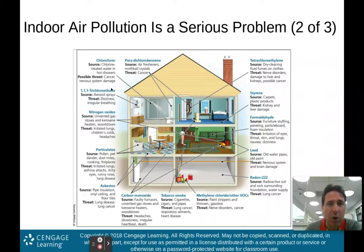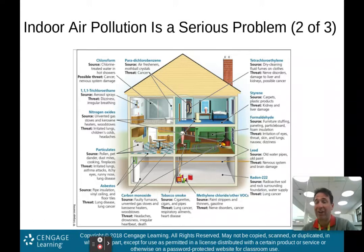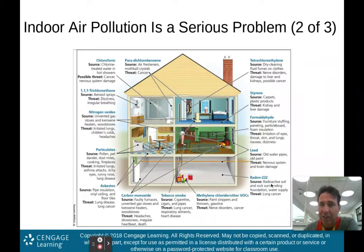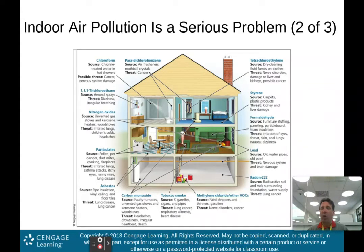You'll notice chloroform, for instance, from chlorine-treated water in hot showers. Nitrogen oxides from unvented gas stoves and kerosene heaters. Particulates from pollen, pet dander, dust mites, and fireplaces — I actually put my air filter on when I use my wood fireplace just in case some smoke gets into the house. Carbon monoxide from faulty furnaces and unvented gas stoves. Some asbestos from pipe insulation. Radon in the basement coming up from the ground. Lead from old water pipes and old paint. Formaldehyde, et cetera. All of our homes have items that produce indoor air pollution.